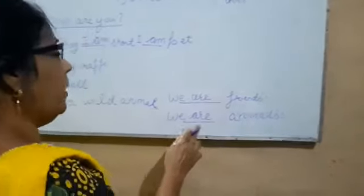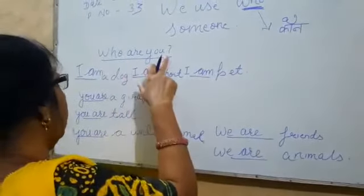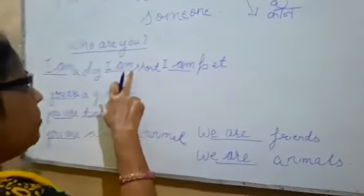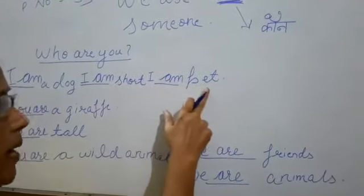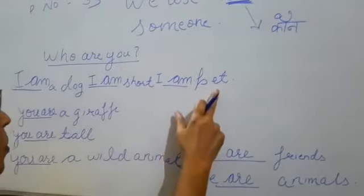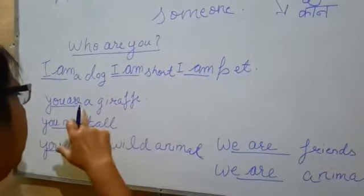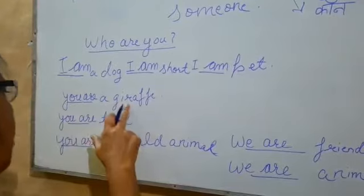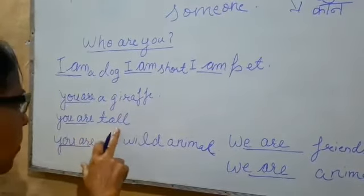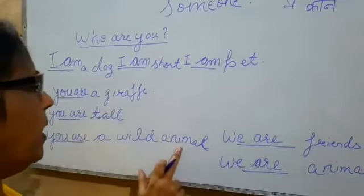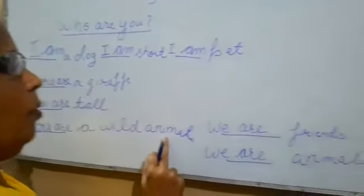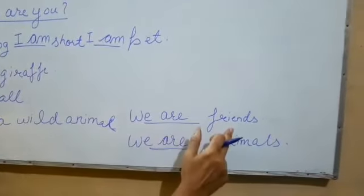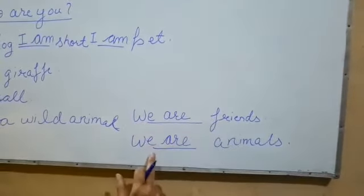फिर से review करते हैं — जिराफ पूछता है: who are you? Dog बोलता है: I am a dog, मैं एक कुत्ता हूँ। I am short, मैं छोटा हूँ। I am a pet, मैं एक पालतू हूँ। Dog जिराफ को बोलता है: you are a giraffe, you are tall, you are a wild animal. और we are friends, we are animals।